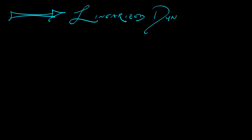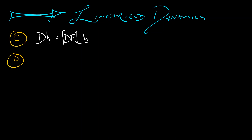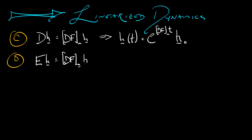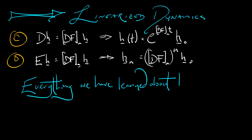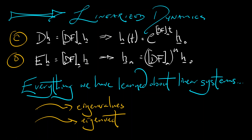Now we're all set, because once we've linearized the dynamics, we know how to solve linear systems. In continuous time, if dh equals df at a times h, then the solution h of t to a small perturbation away from that equilibrium is the matrix exponential e to the derivative of f at a times t, applied to the initial conditions h naught. In discrete time, if e h equals df at a times h, then h of n is that matrix to the nth power applied to h naught. Everything we learned about linear systems is applicable here using eigenvalues and eigenvectors. That's it — we're all set.